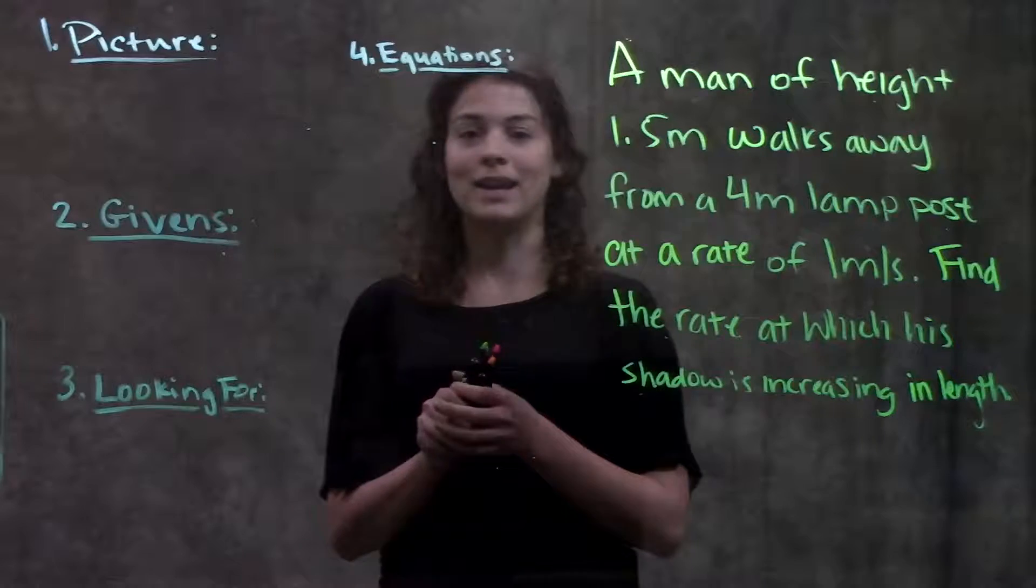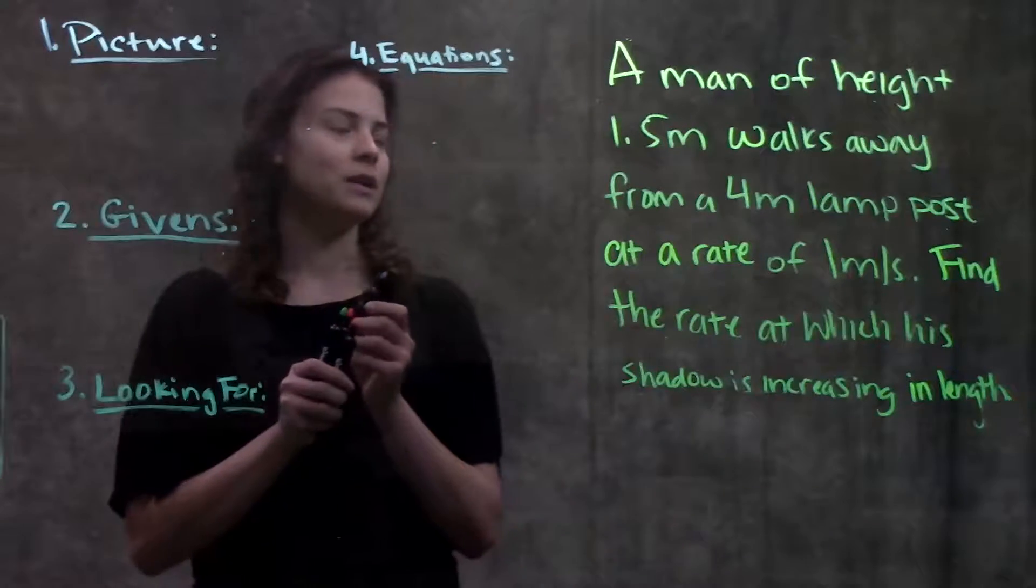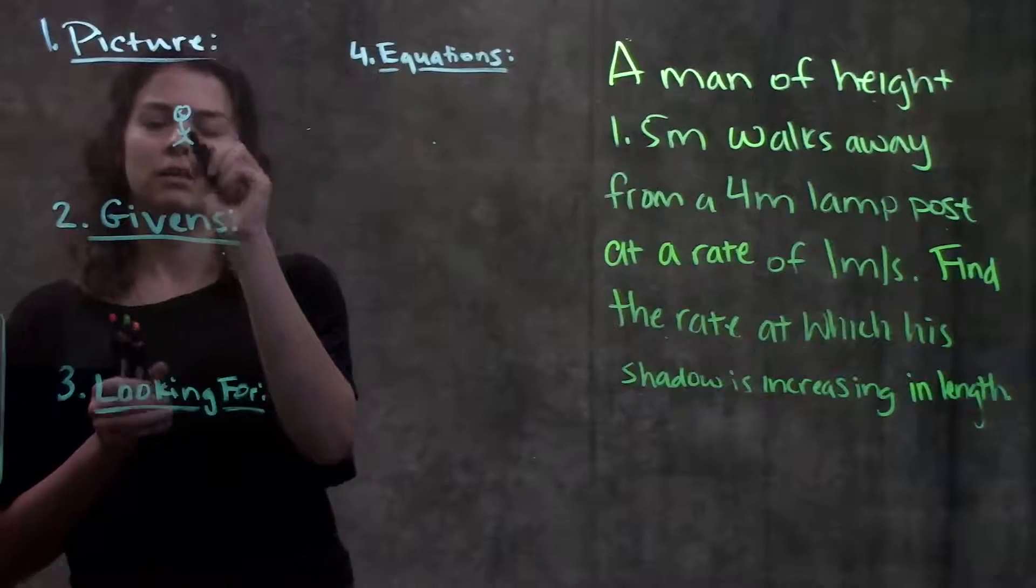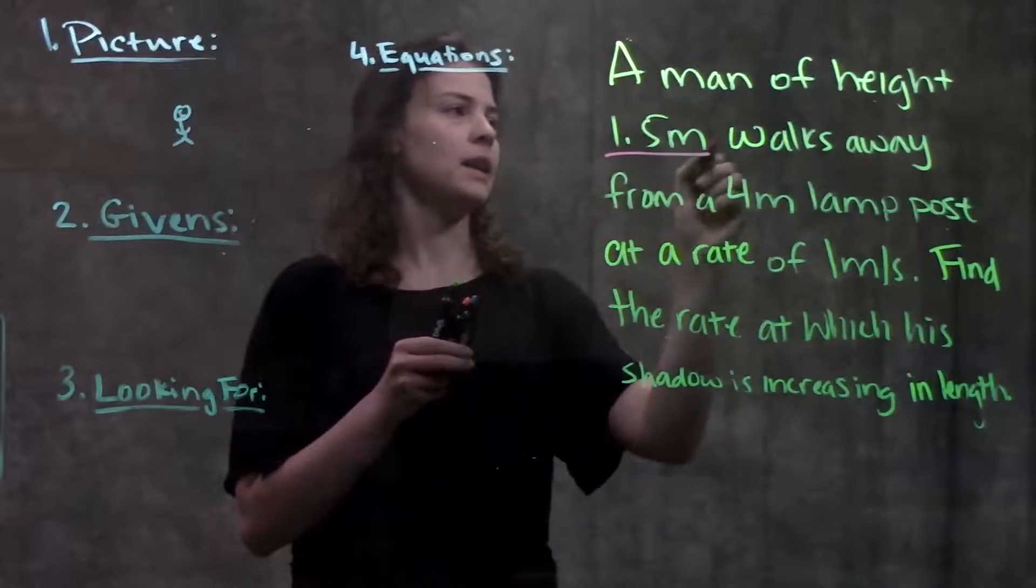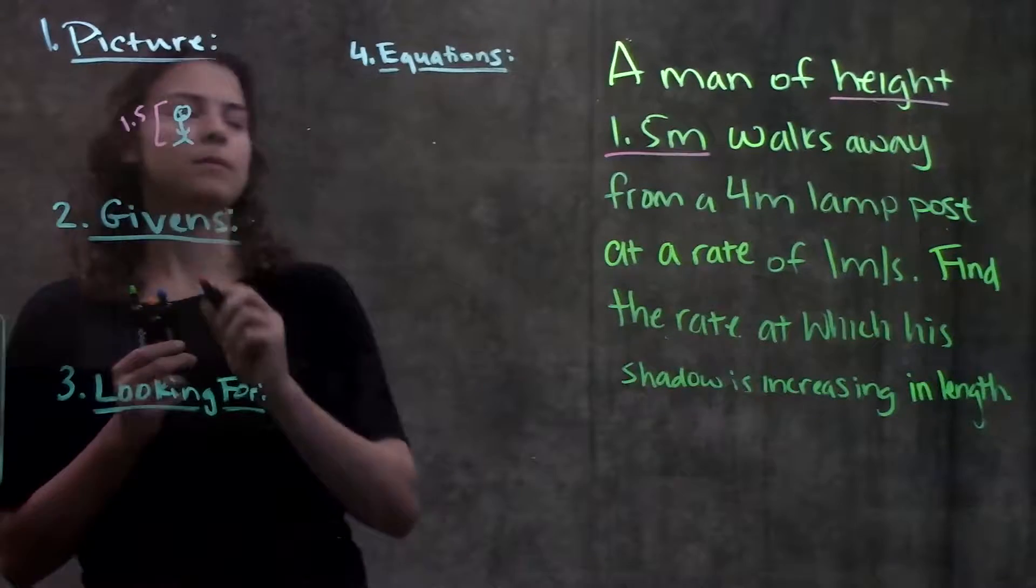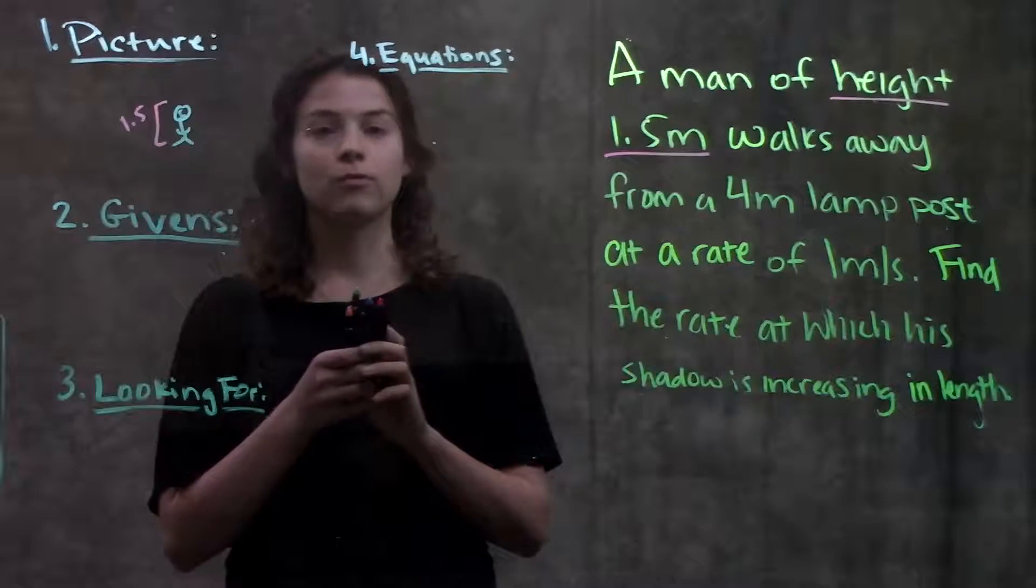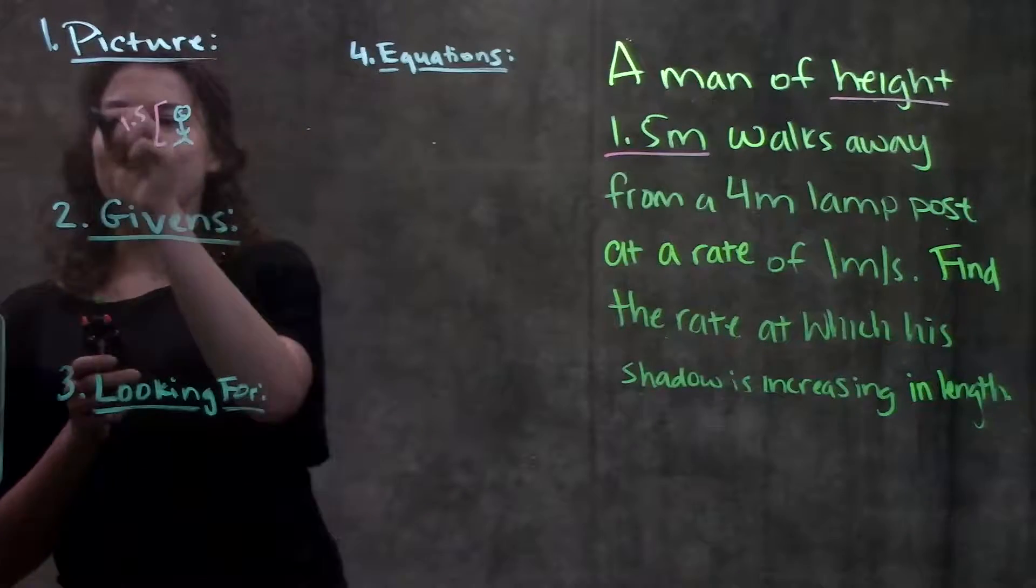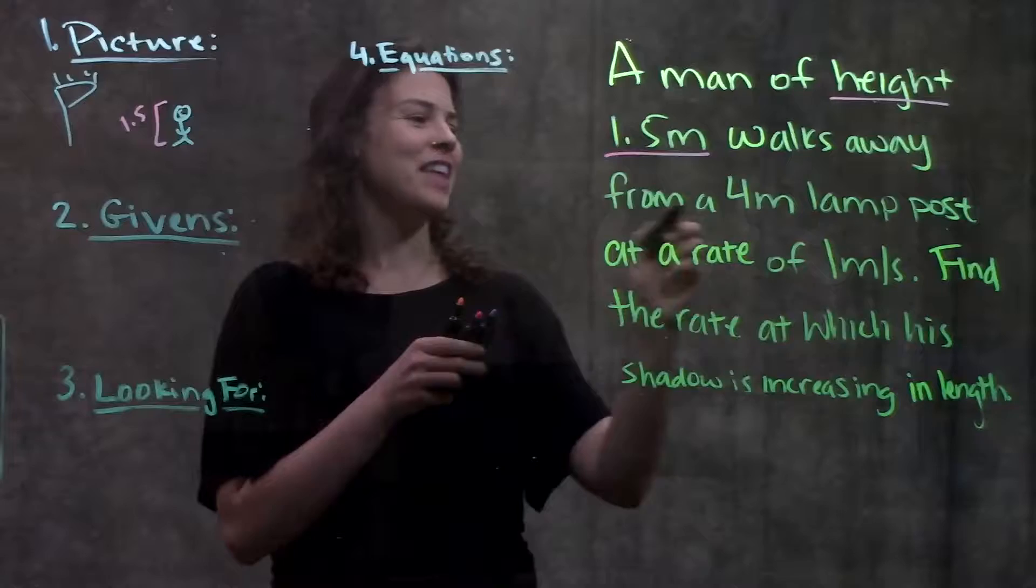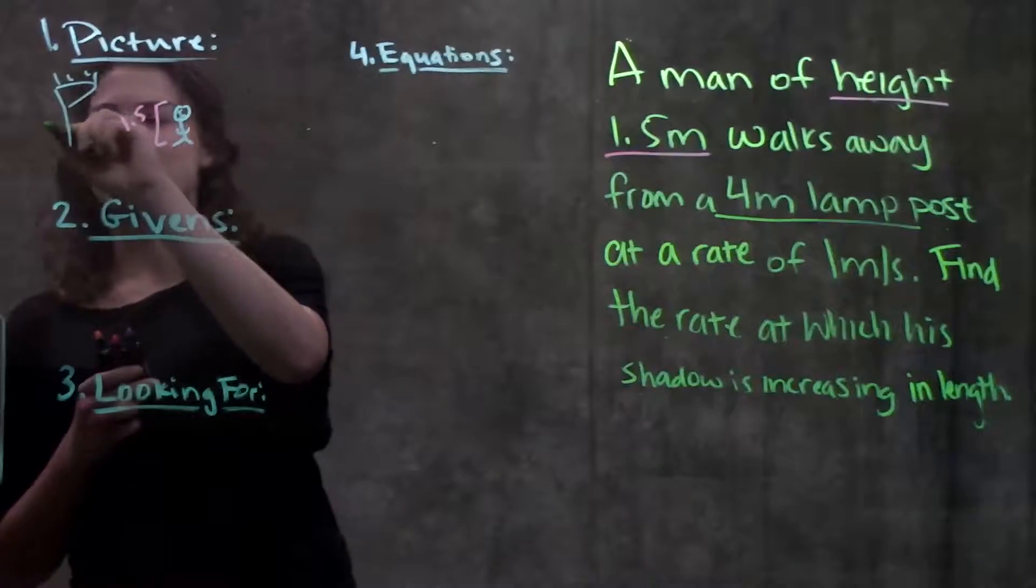All right, so step one is draw a picture. So it tells us a man of height 1.5 meters. Here's my man and he has a height of 1.5 meters. So his height is 1.5 and he's walking away from a 4 meter lamppost. So here's my lamppost beautiful and the lamppost is 4 meters high.